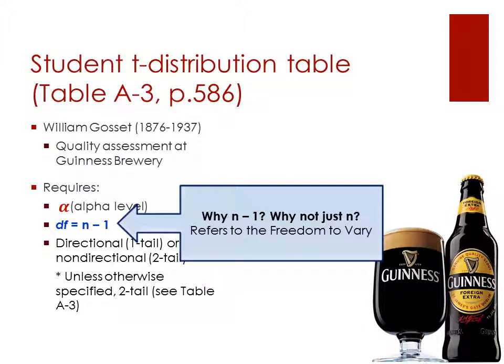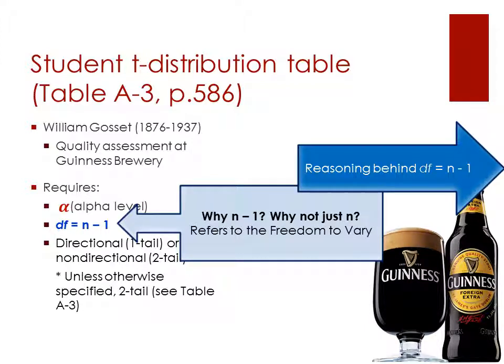Now, one of the concepts that's sometimes difficult to grasp for working with the t-distribution table, and as we go forward looking at the Pearson and other distribution tables, is why we use n minus 1. Why are we not just using the n? Why not just use the sample size? The reason for that is because the degrees of freedom literally refers to the freedom to vary, the number of variables that are free to vary. So we're going to take a segue here to look at the reasoning behind the degrees of freedom as equal to n minus 1.